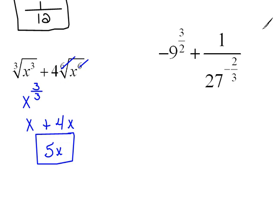In this one right here, we have a negative exponent, which means this is in the wrong position. It does not belong in the denominator. It belongs in the numerator. So, if I rewrite this as negative 9 to the 3 halves power plus 27 to the 2 thirds power, now I've corrected the negative exponent.